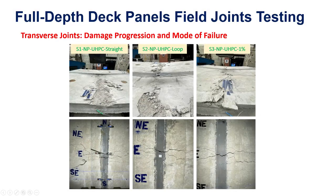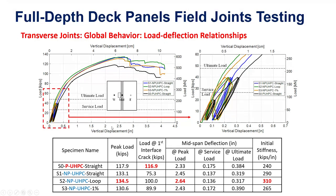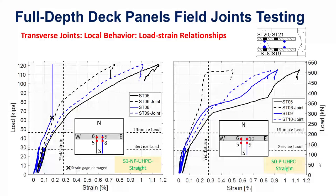For all three transverse joint specimens, failure occurred locally under the point of load application in flexure and compression. Flexural cracks on the tension side went through the joint, but no specific failure occurred at the joint itself. We captured full force-deformation relationships and assessed these against AASHTO guidance for acceptable service and ultimate loads. All specimens remained linear elastic as intended by design, and we compared results against a proprietary HPC specimen of identical configuration.